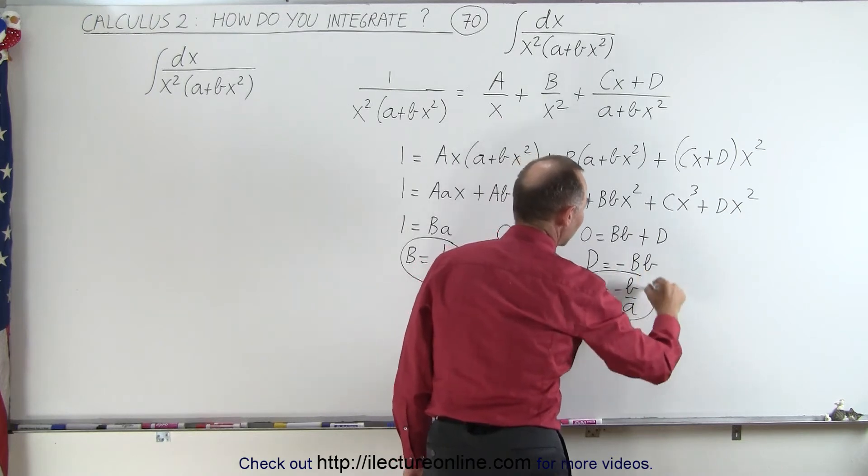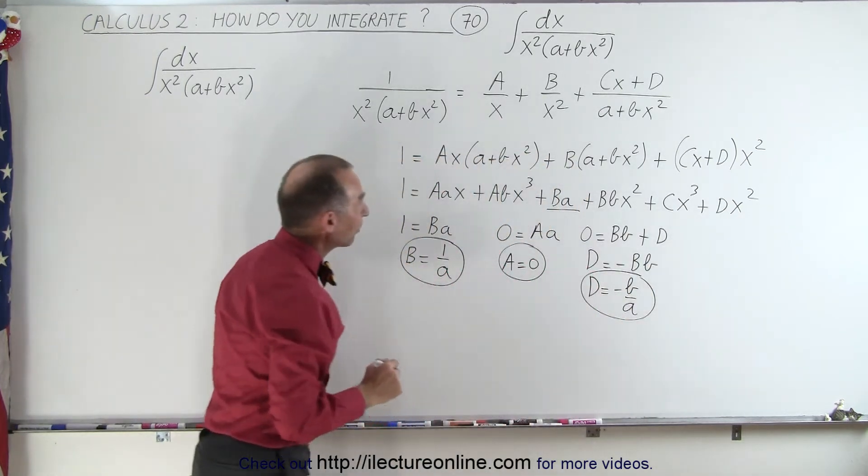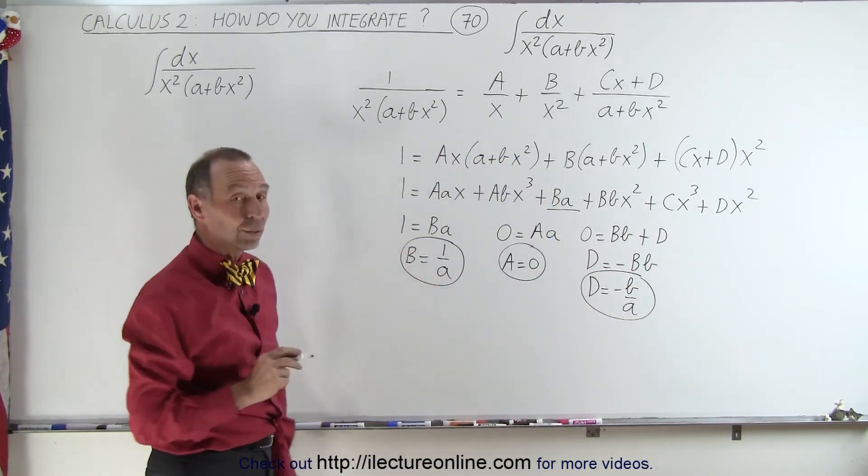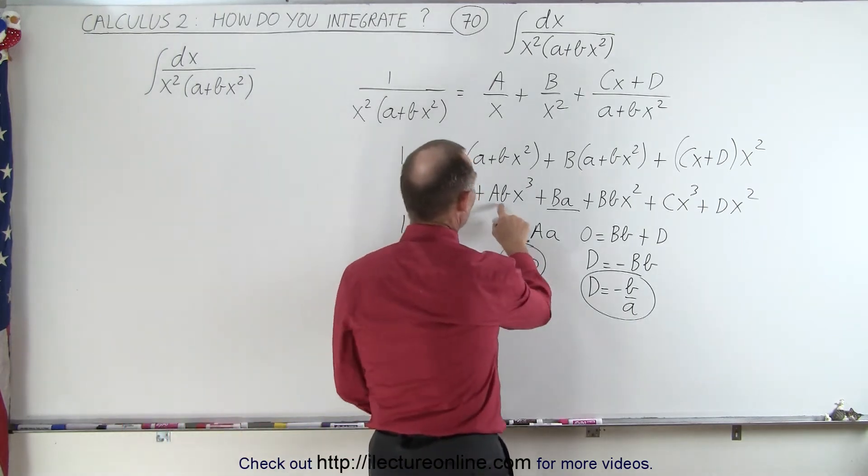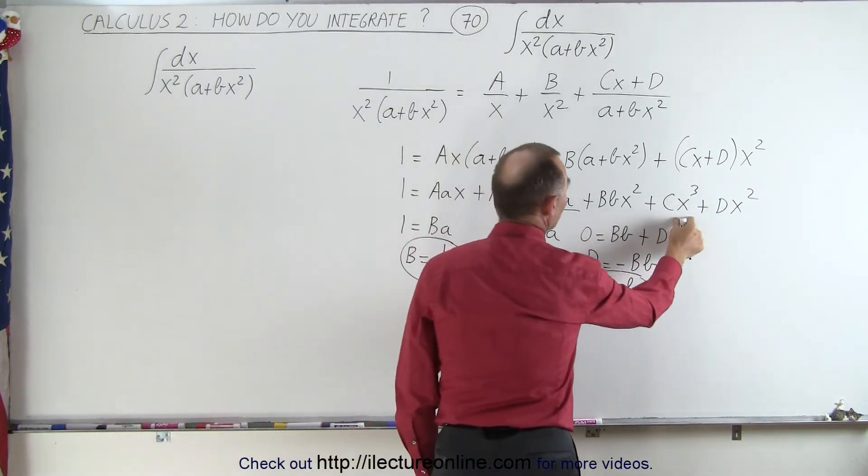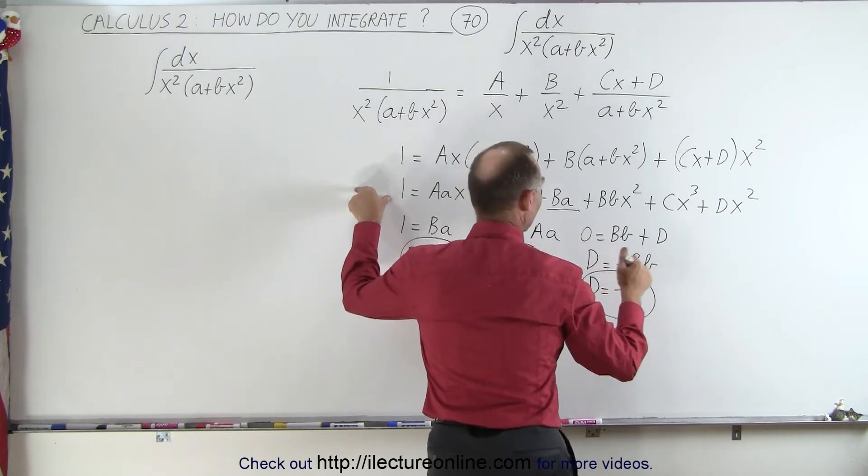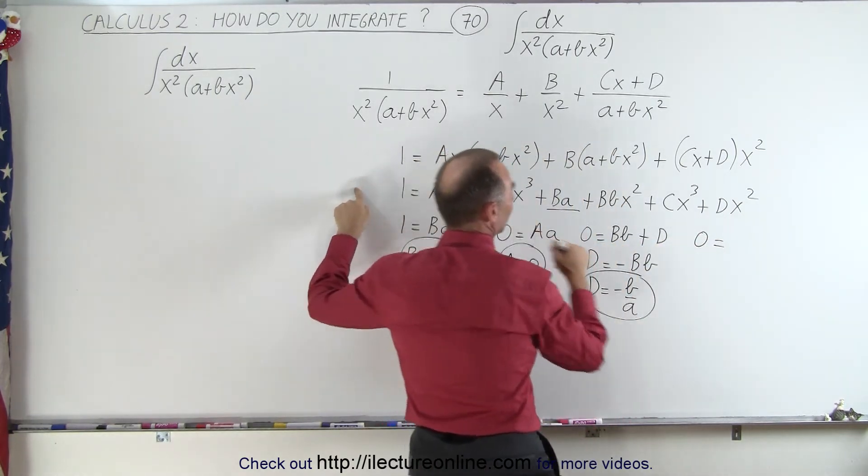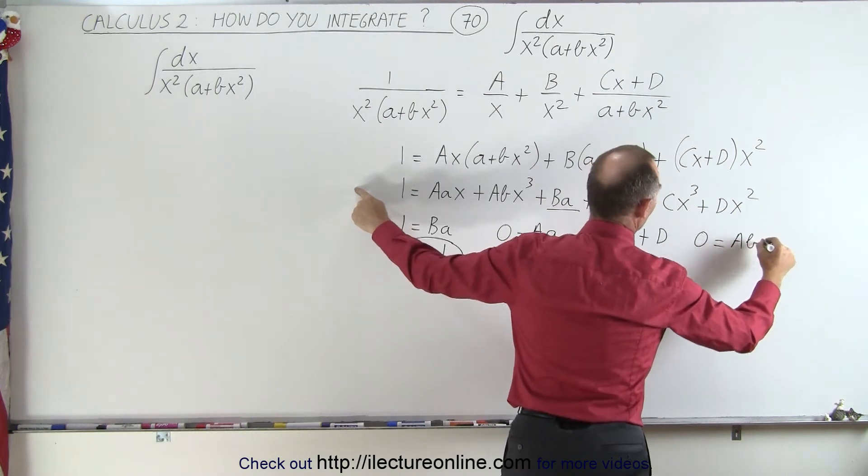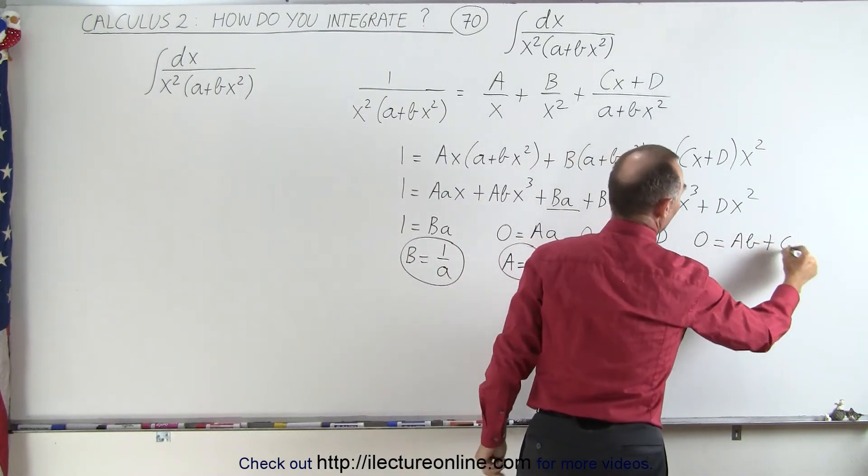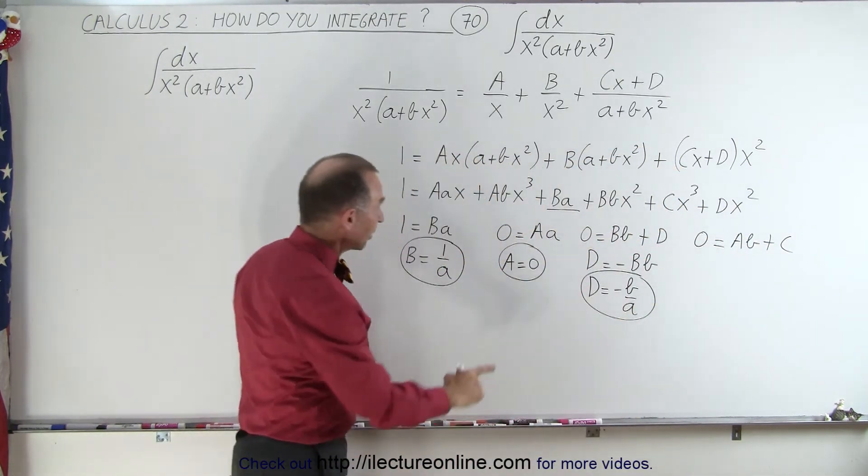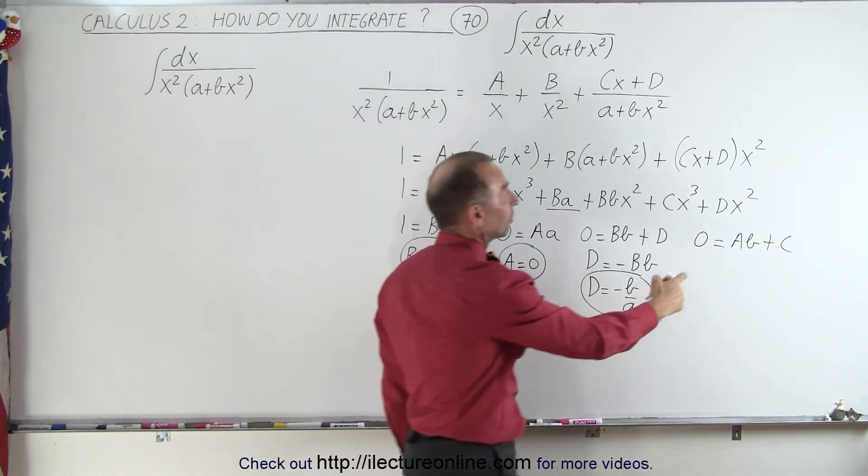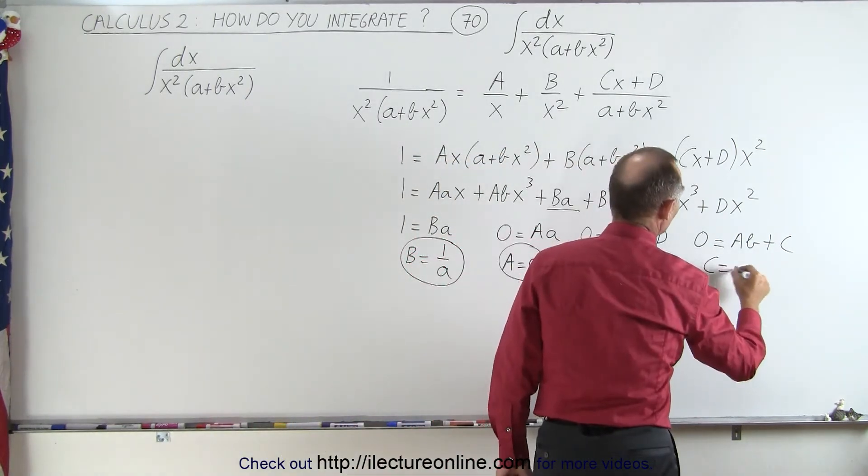So now we have D as well, and all we have to now figure out is what C is equal to. And notice, we have an x cubed term and an x cubed term, no x cubed terms on the left side. So 0 is equal to the coefficient here, which is A times B, plus C. But remember that A was equal to 0. If A is equal to 0, that means C must be equal to 0 as well.